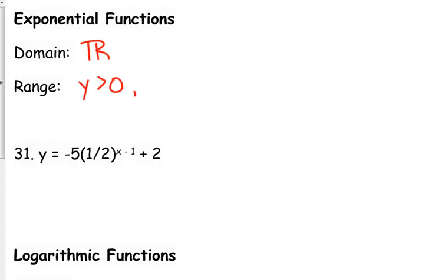But if there is a negative in front of the exponential function, like with number 31, then it's going to flip your function over. It's going to take your output and multiply it by a negative number, so all of them are negative. So then you've got y < 0. And there's even one more thing going on here in number 31. It's got a plus two on the end, so it's going to take all the values and shift them up.